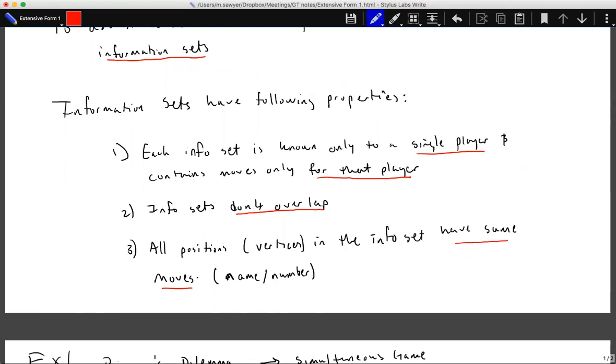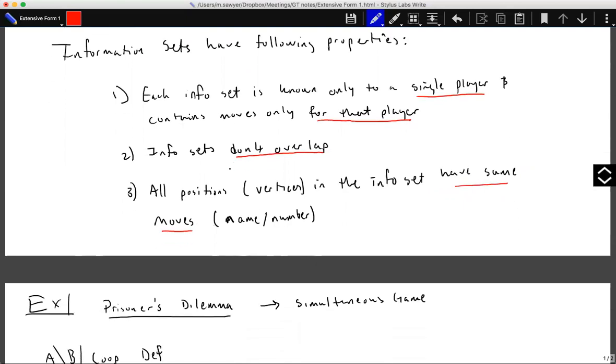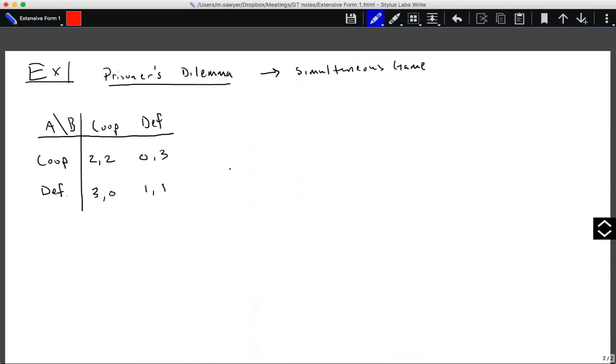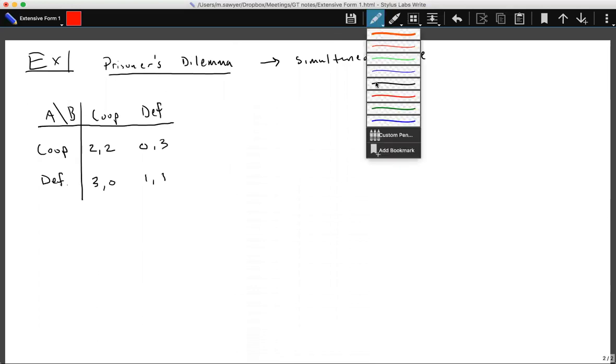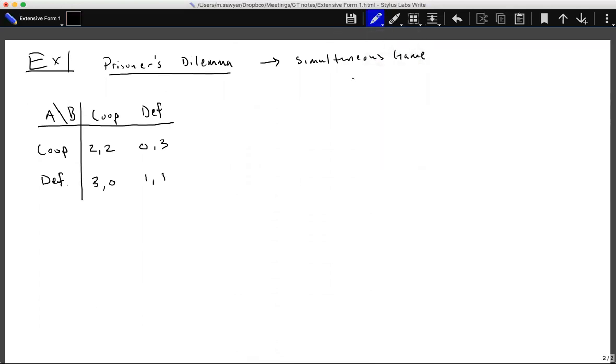So to illustrate the idea of information sets, let's take a simultaneous game, namely the prisoner's dilemma, and let's turn this into the extensive form using the game tree and the concept of information sets. So on the left is the normal form matrix for the prisoner's dilemma.